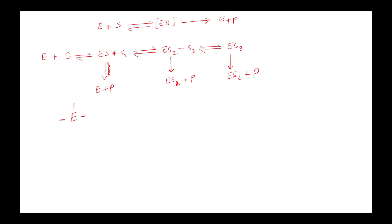The first substrate can bind to all three sites on the enzyme, so the first rate of reaction is higher. Once one site is occupied, the enzyme has two binding sites remaining, so the rate of reaction is lower than rate one. The third rate is much slower still, as only one site is left. The rate therefore depends on the availability of binding sites on the enzyme.